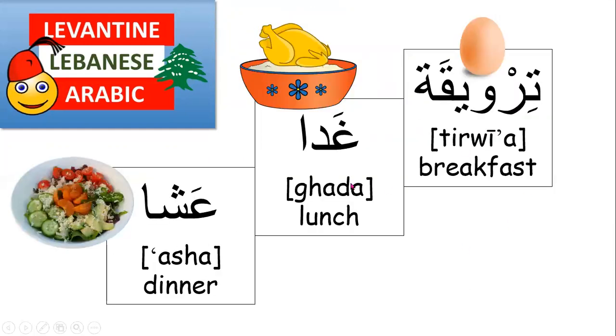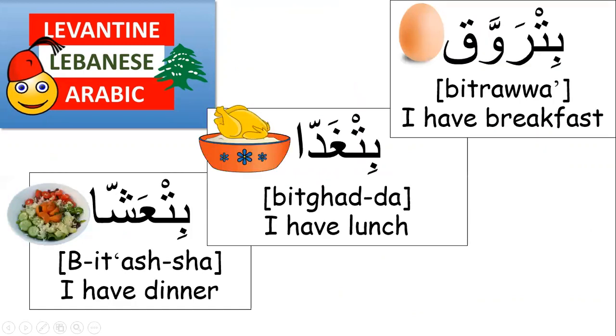Terwi'a, ghada, asha. And we say bitrowa, bitghada, bitasha. Bitrowa, bitghada, bitasha.